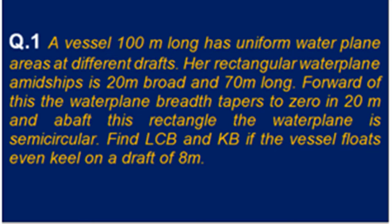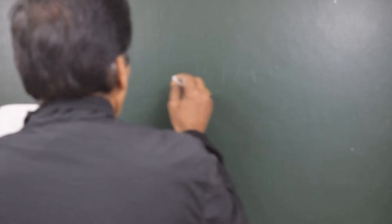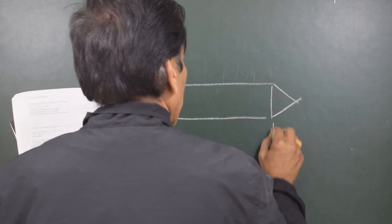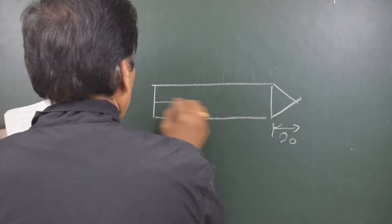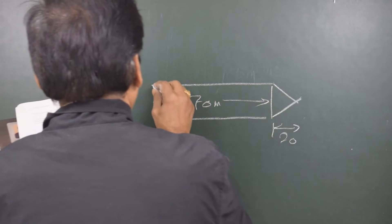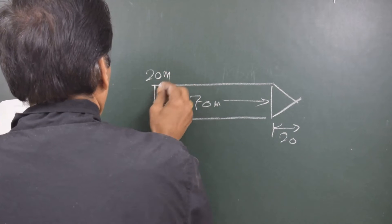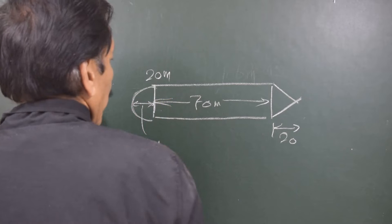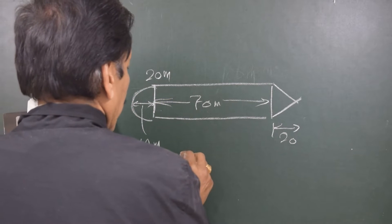The first question: a vessel 100 meters long has a uniform water plane area at different drafts. A rectangular water plane amidship is 20 meters broad and 70 meters long. Forward of this, the water plane breadth tapers to zero in 20 meters. Above this rectangle, the water plane is semi-circular. Find LCB and KB. The semi-circular portion therefore has a radius of 10 meters, and the total length of the vessel from forward to aft is 100 meters.